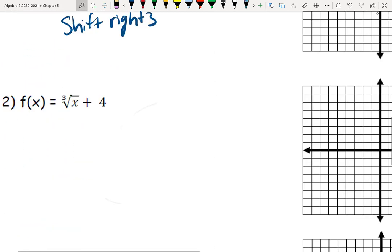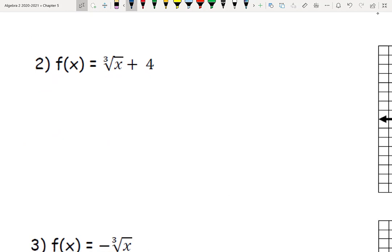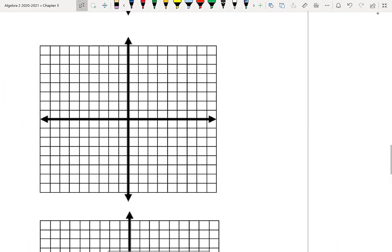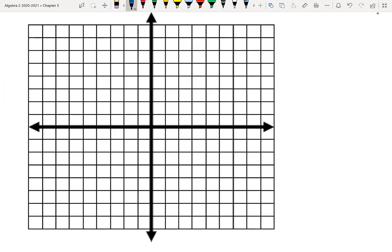Moving on to number 2 here, we are adding on the outside. Anything that's happening outside of my function is a vertical change. Addition is shifting it up in this case. So this is going to be shifting my graph up 4. If I go ahead and apply that to a cube root function, instead of being at (0,0) to start with, we're going up 4. So up 1, 2, 3, 4. This is now my origin. That is where my graph is starting.